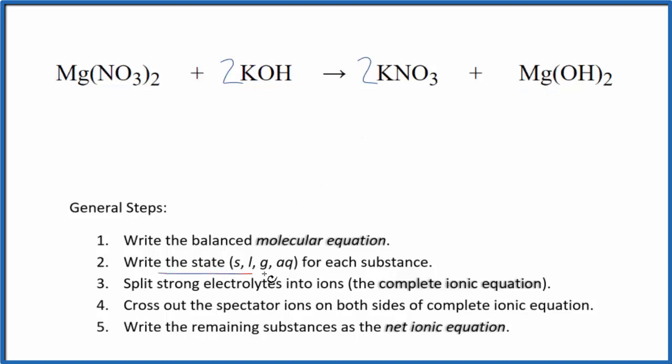Now we can write the states for each substance. Magnesium nitrate—nitrates are very soluble—that's going to dissolve and dissociate. KOH, potassium hydroxide, a strong base, is also going to dissociate. Another nitrate here.